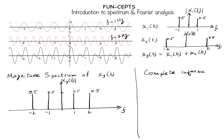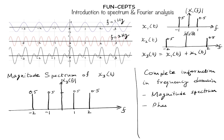So the complete information in the frequency domain is provided by two parts of the spectrum: one is the magnitude spectrum, and the second is the phase spectrum. Together, the magnitude and phase spectrum give us a complete representation of the frequency content present in the signal.